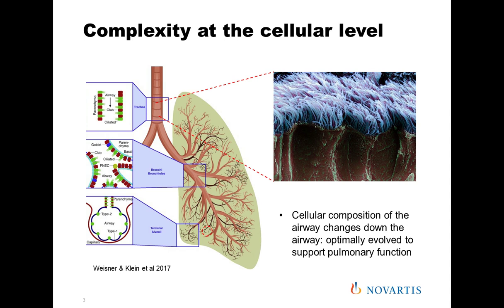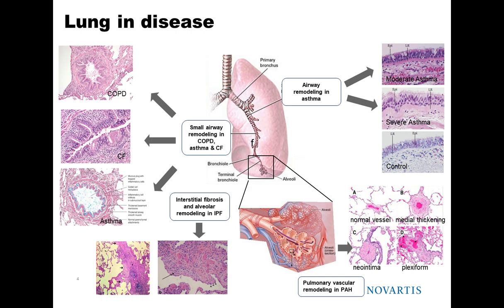The lungs throughout the airway tree have a highly evolved structure and function. Looking down at the gas exchange area, the alveolus is made up of two principal cell types: alveolar epithelial type 1 cells and alveolar type 2 cells. Type 2 cells are responsible for producing surfactant which lines the alveolus, reduces surface tension, and keeps the alveoli open — another critical role in maintaining gas exchange.